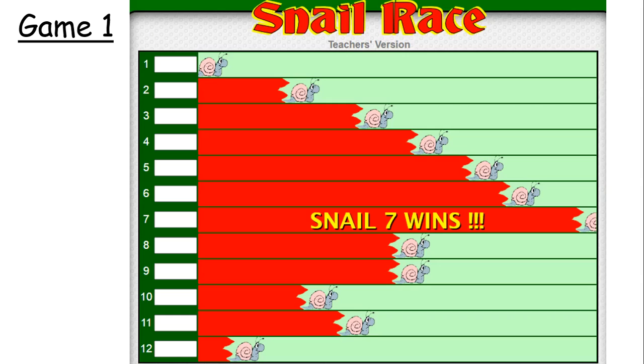So, game one that I played earlier, I predicted that snail number seven was going to win. I played the game and lo and behold, snail number seven wins. Now, if we look at this diagram, we can see number one didn't even get off the blocks. Number six did quite well. Eight and nine did okay, but seven was well ahead.